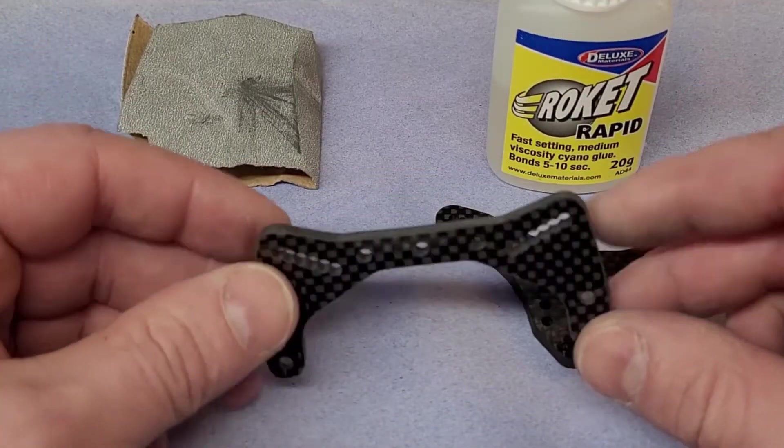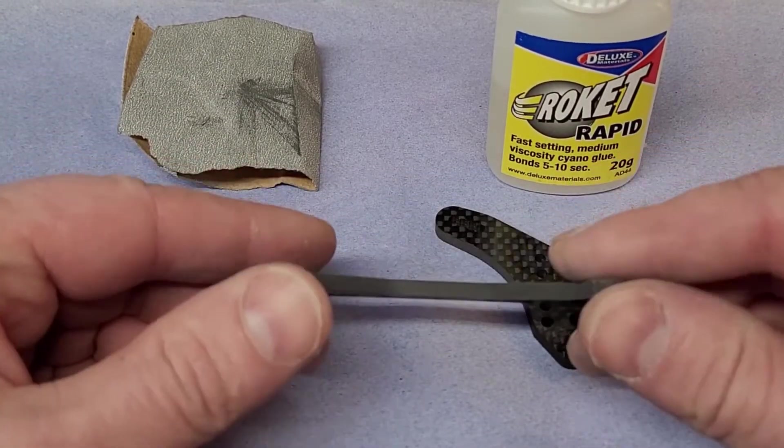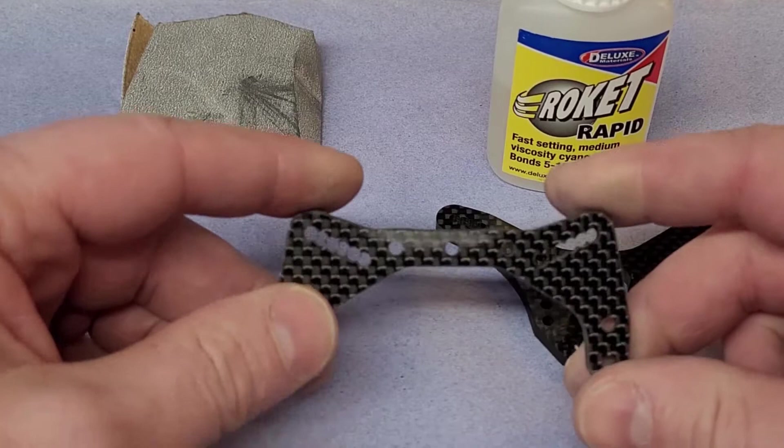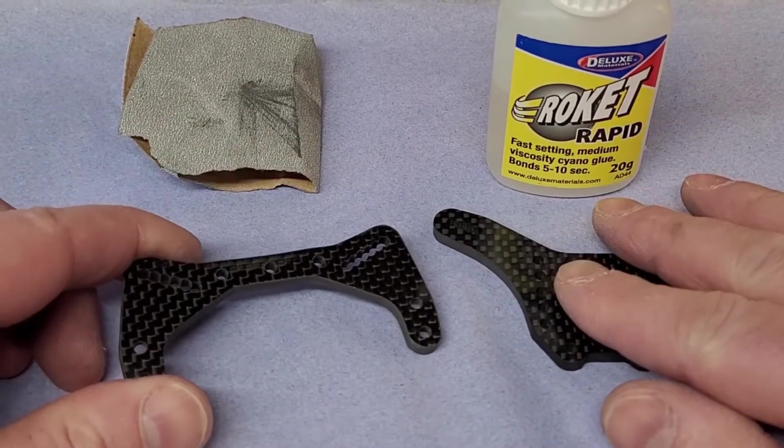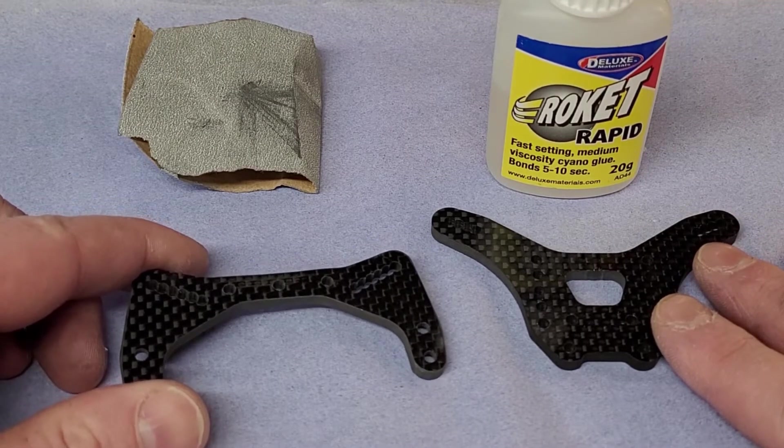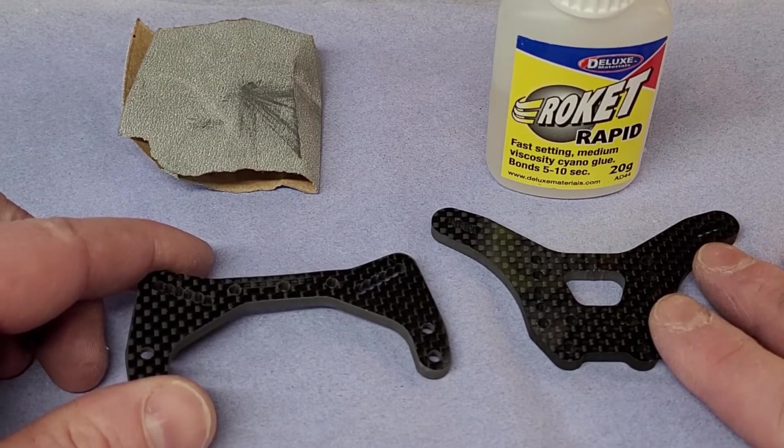Now, you just need to be aware when you do seal the edges it does affect the flex of these products. So in certain instances you actually won't want to seal the edges if you've got carbon fiber wishbones or carbon fiber chassis, and I probably wouldn't recommend doing it.